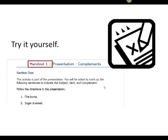Let's try it. Handout 1, section 1, contains two sentences. Fire burns, sugar is sweet. What I'd like you to do is take a pen or a pencil and circle the word you believe is the complement in each of these sentences.